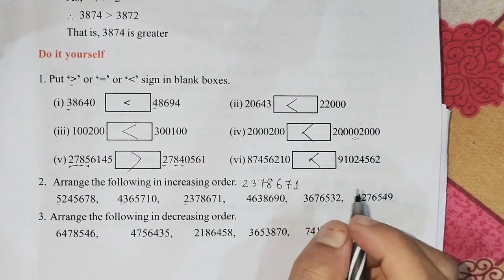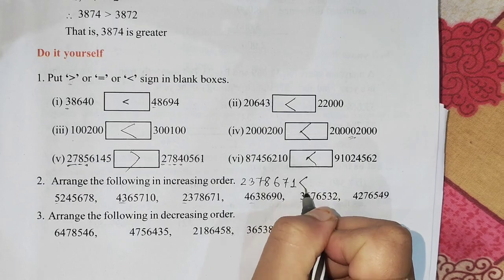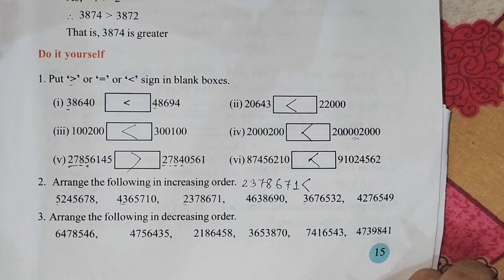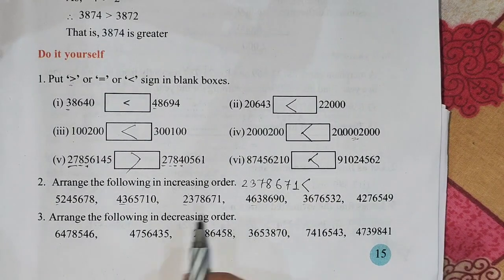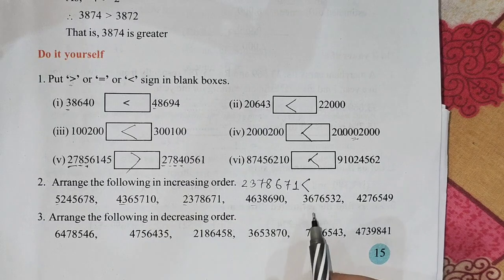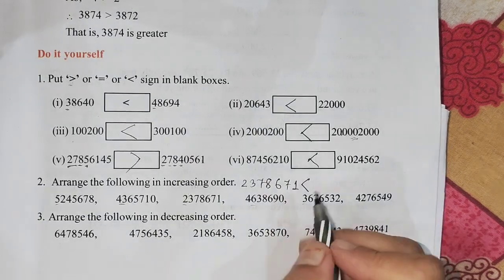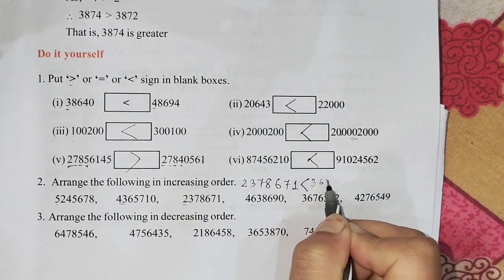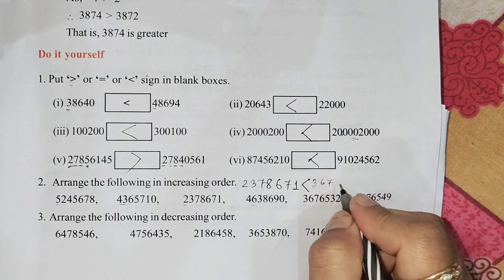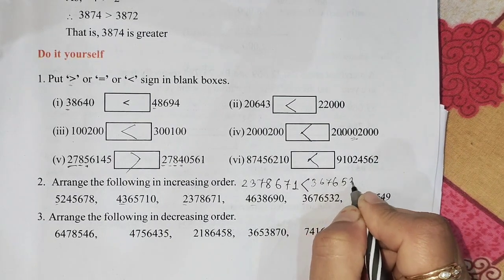This is the last one: 2, 3, this is 3, 6, 7, 6, 5, 3.